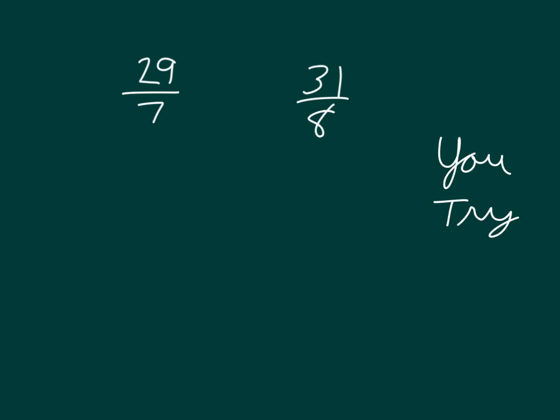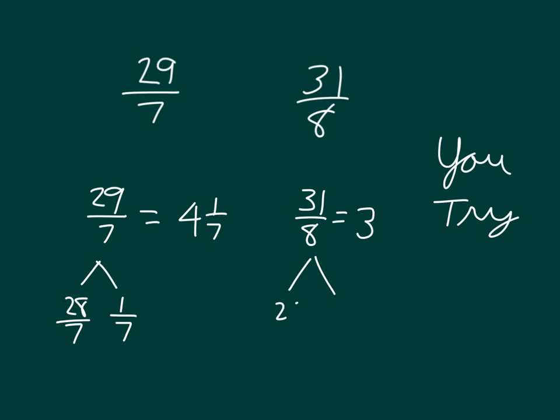What did you rewrite these as mixed numbers as? Did you break them apart correctly? That 29 sevenths is 4 and 1 sevenths. 31 eighths is actually equal to 3 and 7 eighths.